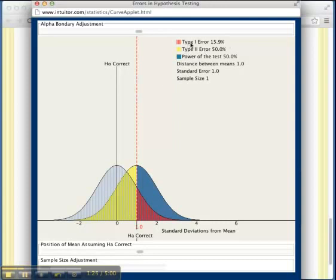Now if you look up here, you can see the type 1 error. Alpha, the probability of type 1 error is 15.9%. Beta, the probability of type 2 error is 50%. And the power of the test is 50% in this setup.